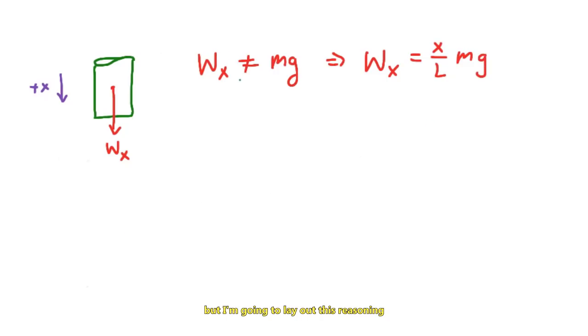But I'm going to lay out this reasoning. You see, only the weight of the piece of the rope hanging off the table will cause the rope to accelerate. And as more of the rope hangs off the table, the rope will accelerate even faster.